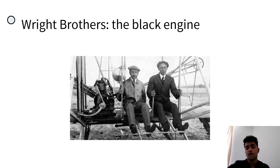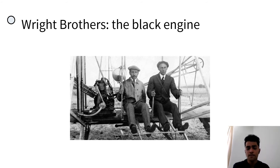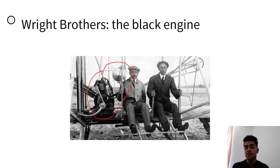Another case study where materials played a great role was during the Wright brothers' period. Back then, aluminium was relatively new — this was around the 1910s. The entire aircraft was designed using wood, and the engine was painted black because at that time aluminium was new and people were still using steel engines. The Wright brothers came across an aluminium engine and painted it black so no one would know about it, since steel and iron engines had a really large mass, which is not good for a wood-built aircraft.